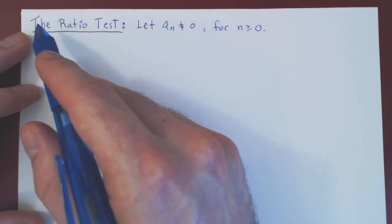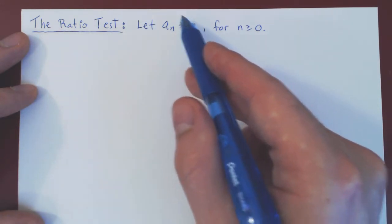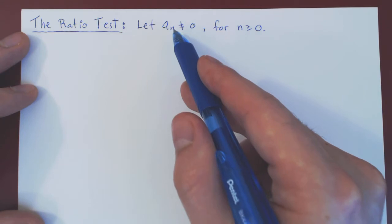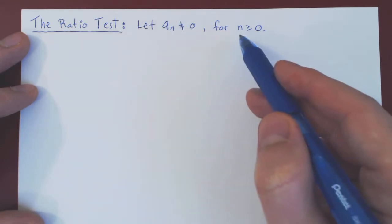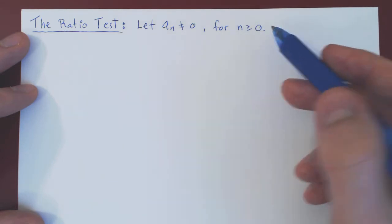Okay, so in this video, we will introduce the ratio test. Here's the assumption: we assume we have a sequence, an, where every term is non-zero. So a0 is not zero, a1 is non-zero, a2 is non-zero, and so forth.